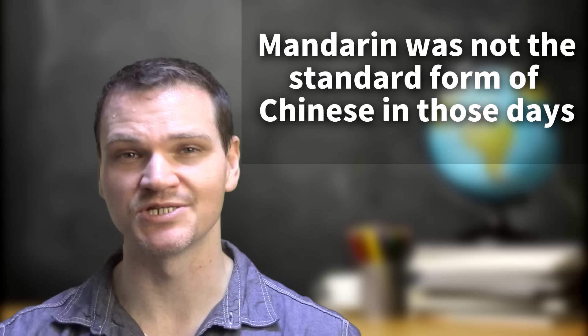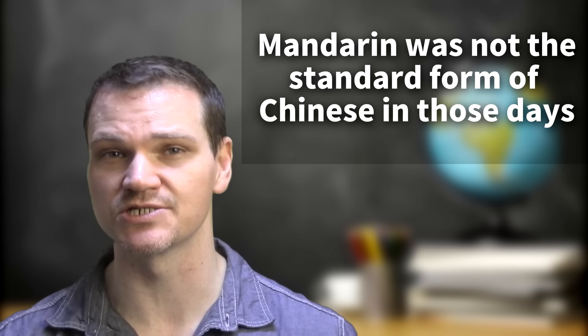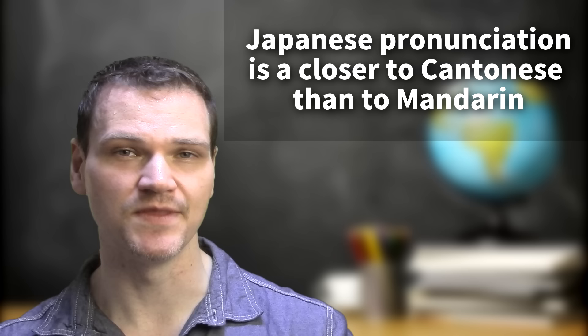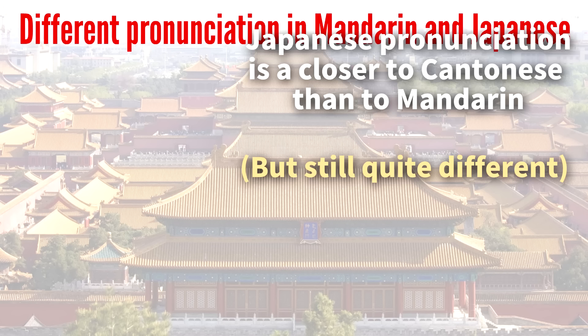And it's also important to point out that Mandarin was not the standard form of Chinese back in those days when those vocabulary words were borrowed into Japanese. So even at the time they were borrowed, the pronunciation was different from standard Chinese today. And from what I understand, the modern Japanese pronunciation of those loan words is often more similar to modern Cantonese than it is to Mandarin. These examples show how the same words are pronounced very differently in Japanese and in Mandarin.